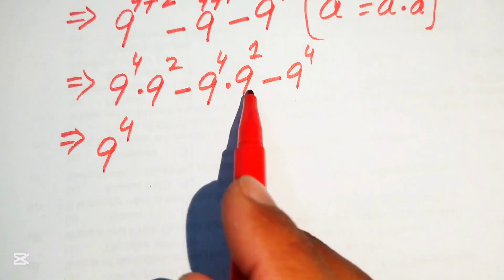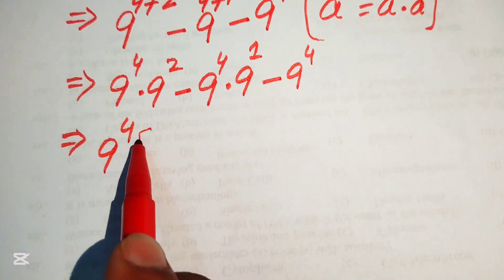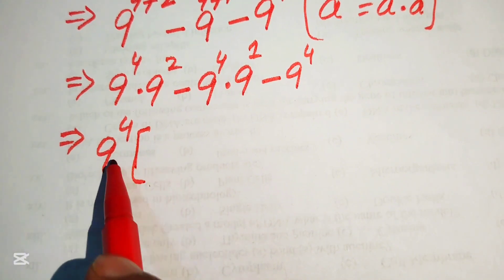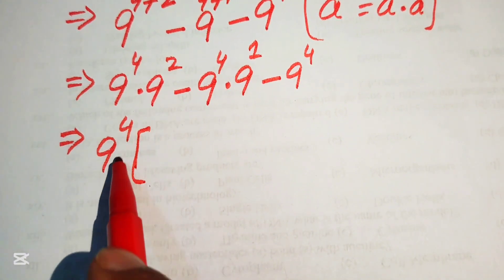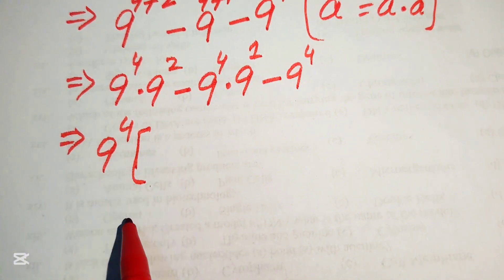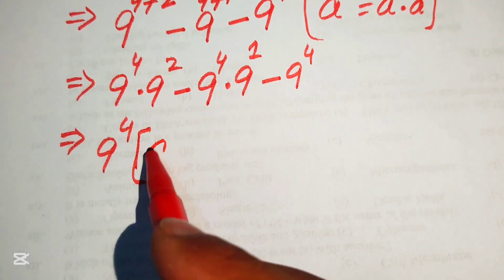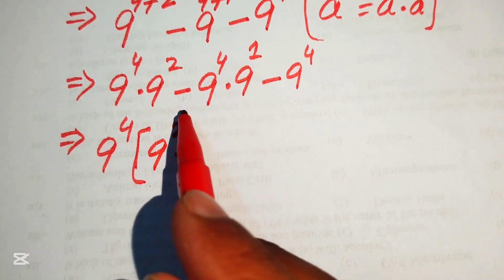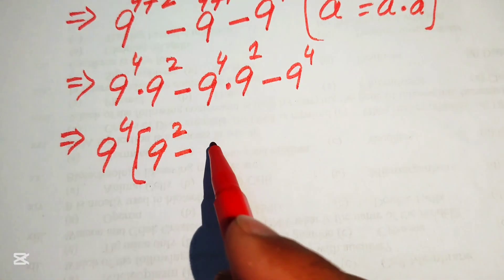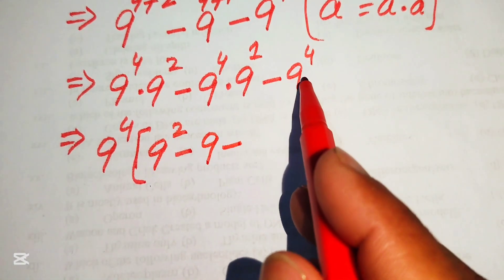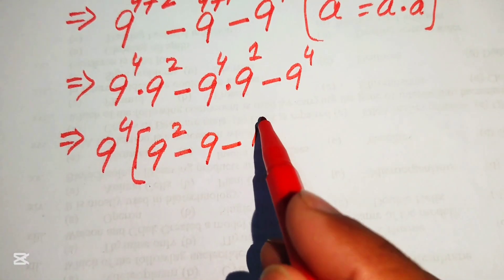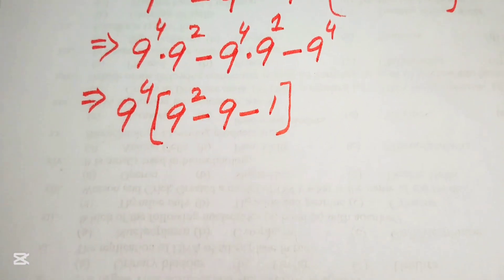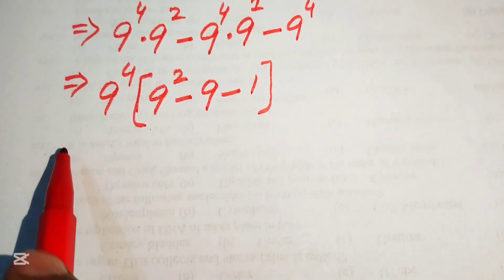Next, we factor out 9 to the power of 4, since it is present in each term. Taking 9 to the power of 4 as a common factor, the remaining terms inside the brackets are: 9 squared minus 9 to the power of 1 minus 1.